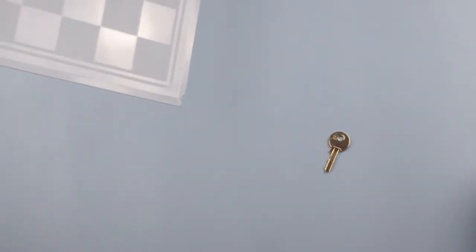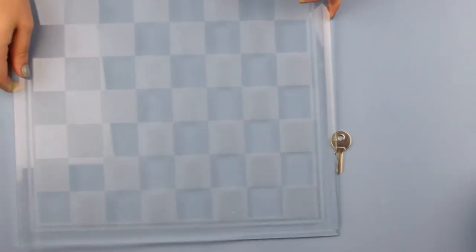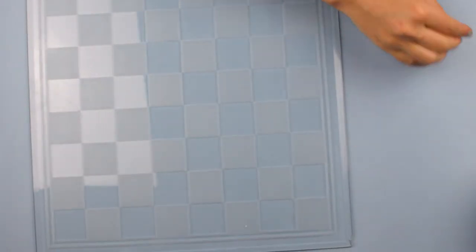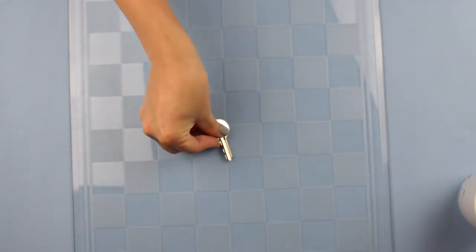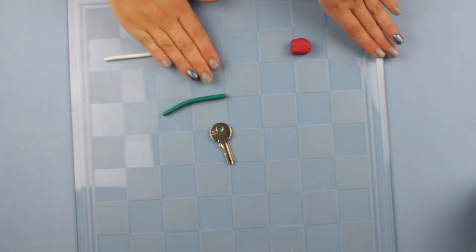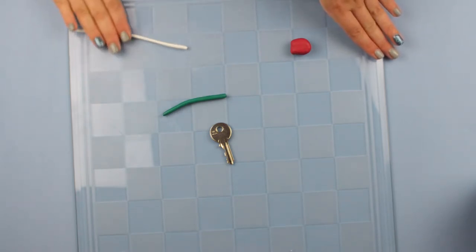As my working surface I'm using an old checkerboard that's made out of glass. That's because it's so much easier to work with clay on glass. It won't stick as much, it's just gonna make your life a lot easier. If you don't have a checkerboard you can use a glass from an old frame or whatever.